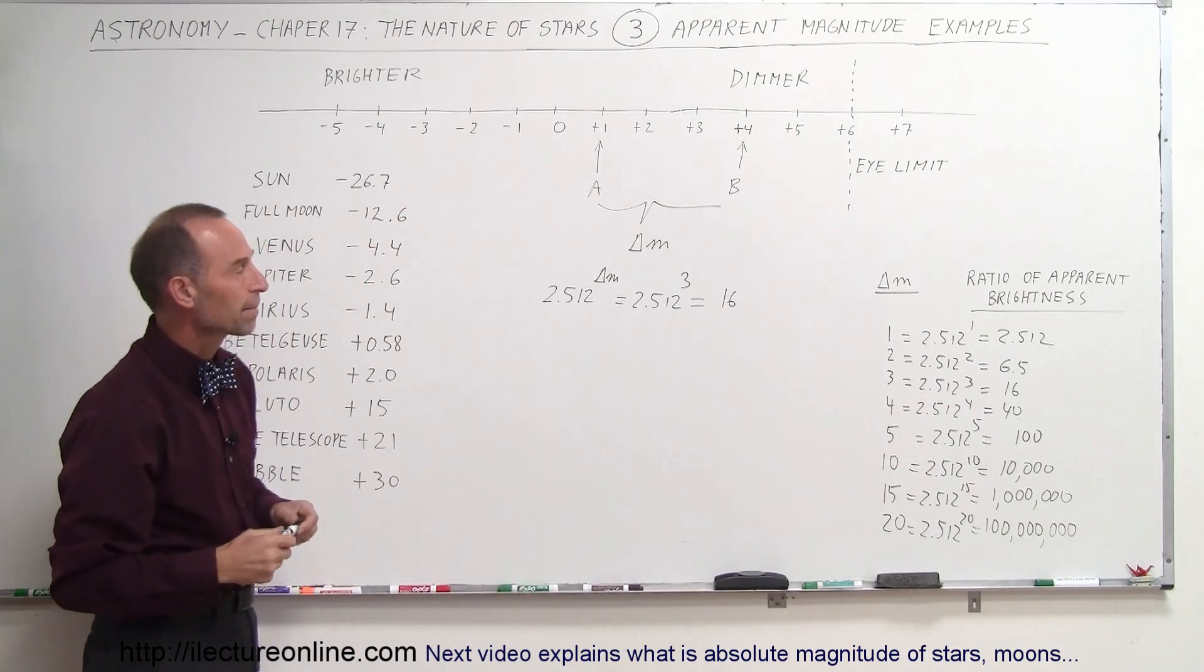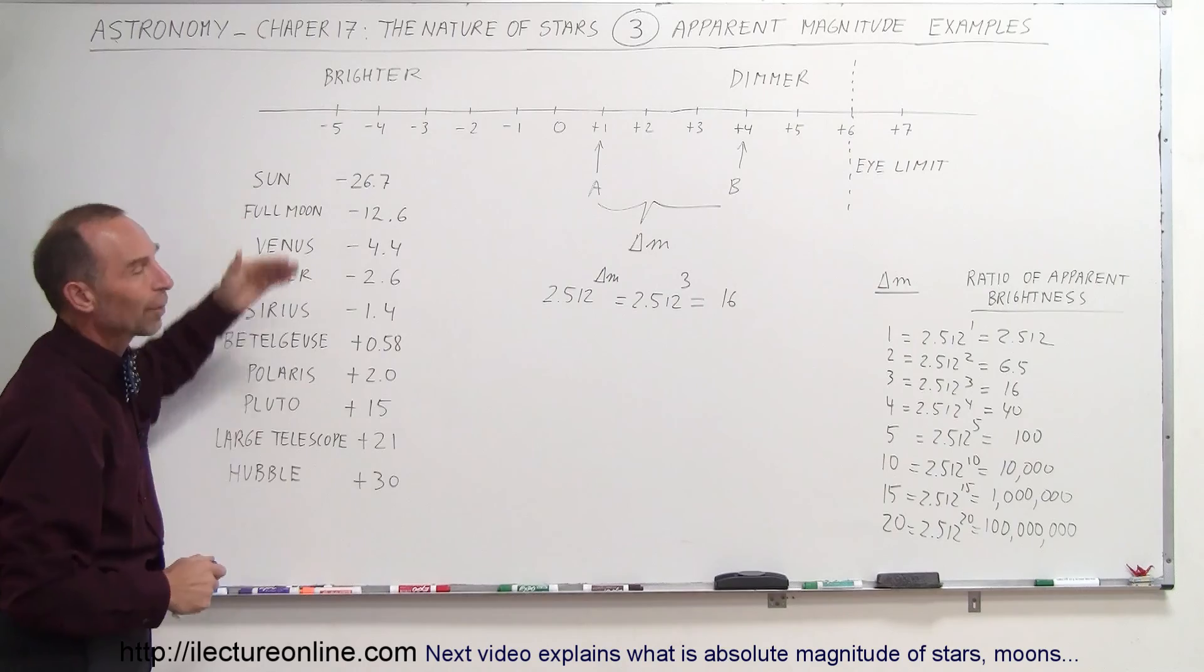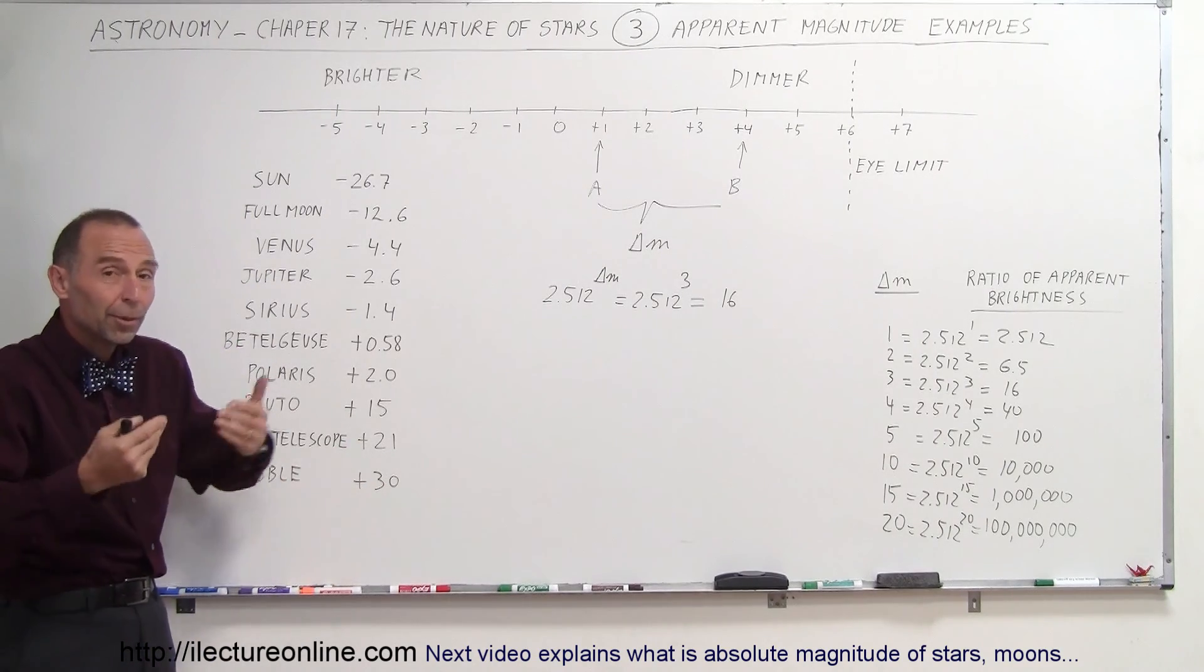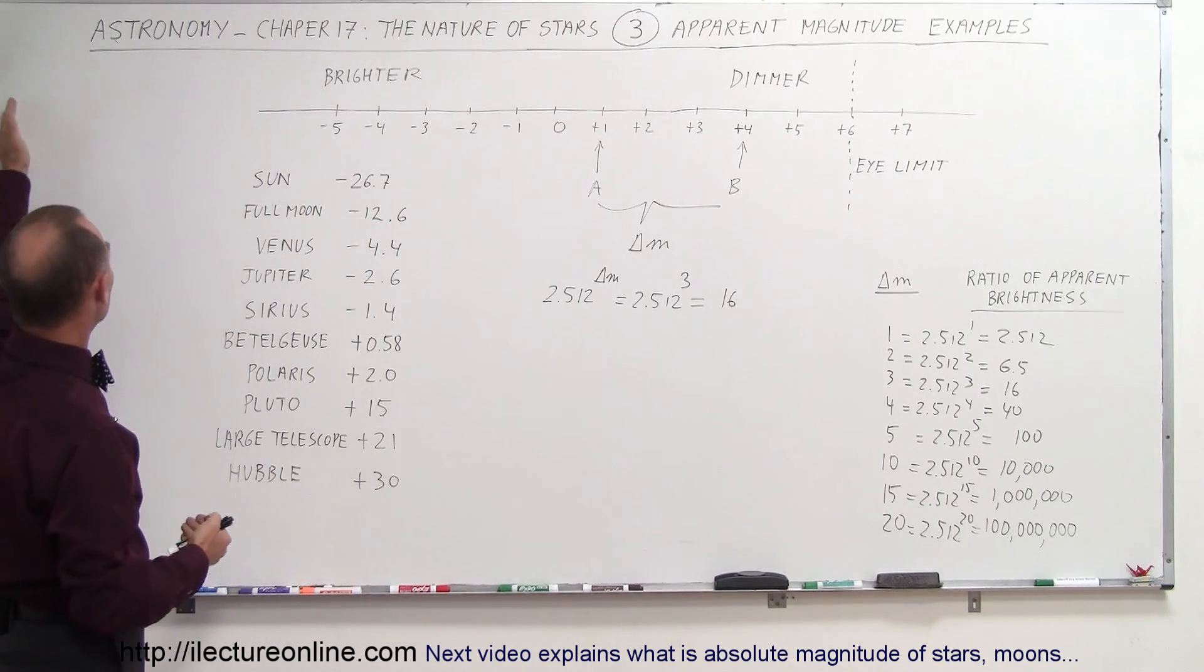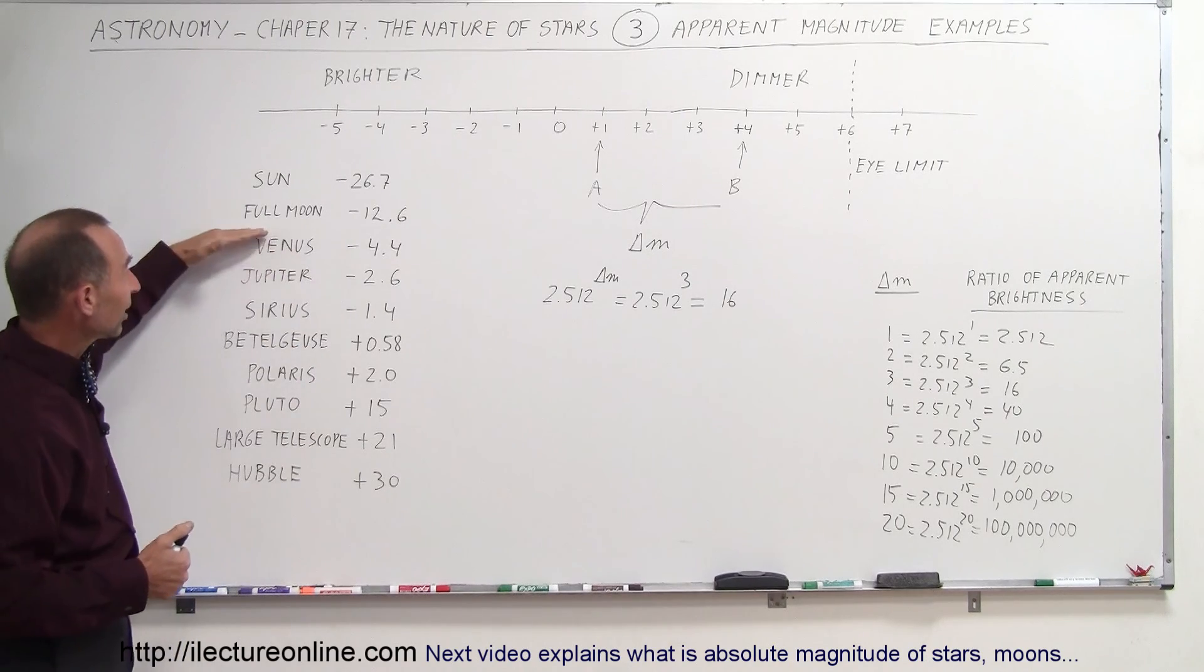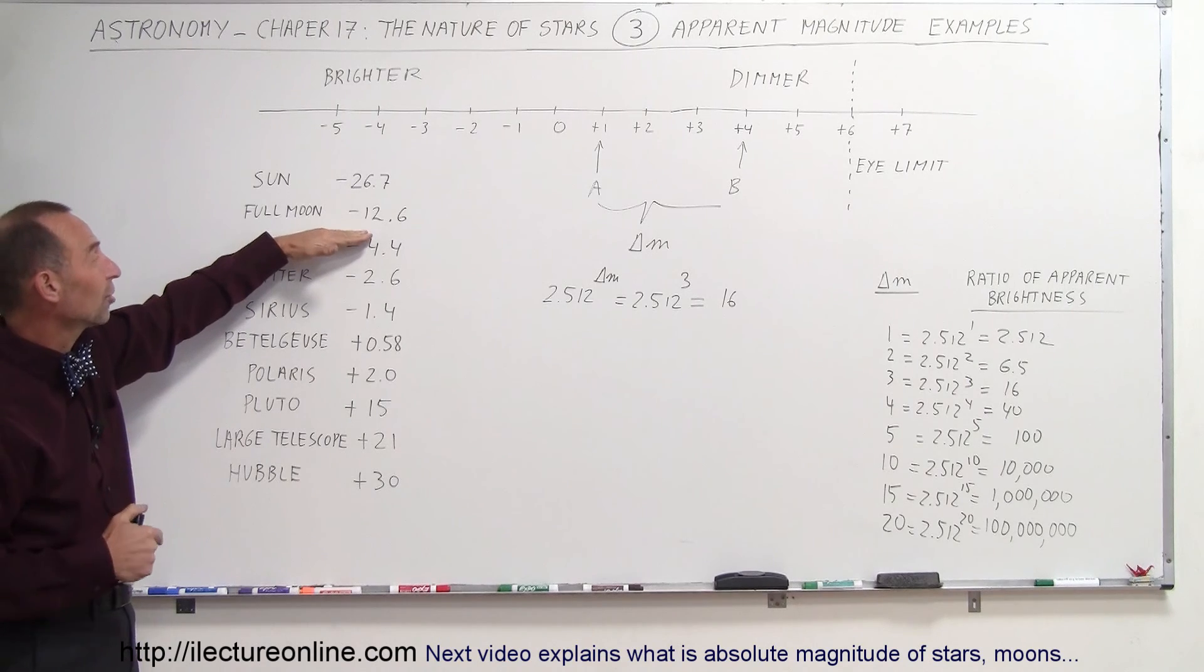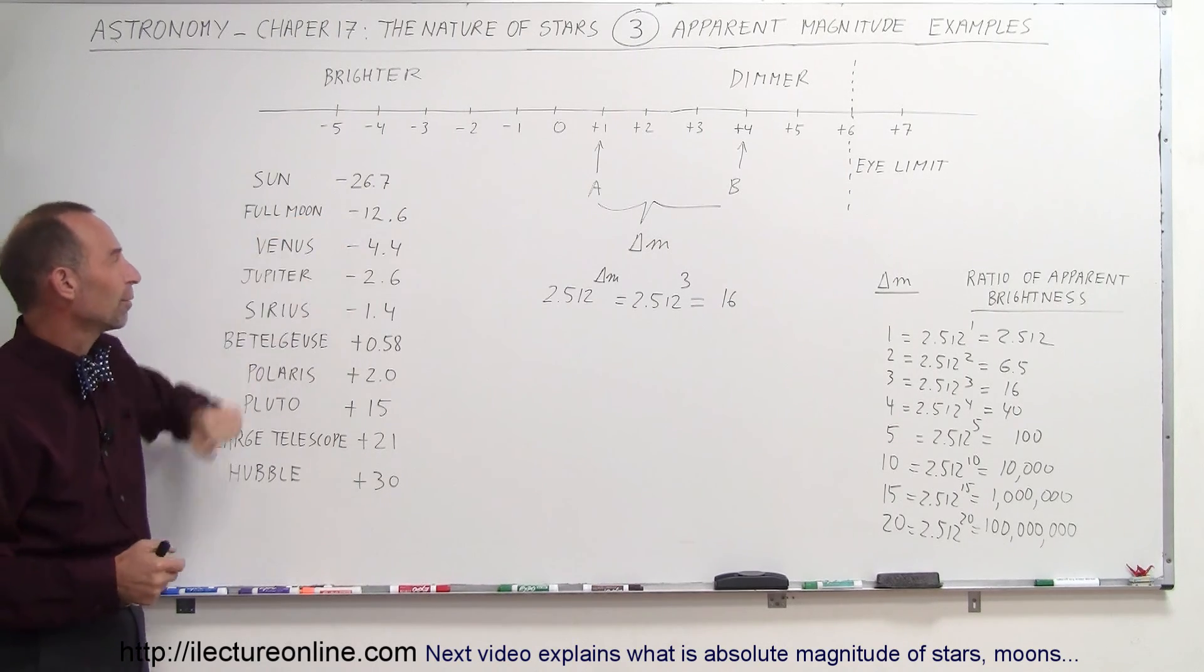Now here's some examples. Our sun is of course the brightest object in the sky, not because the sun is particularly bright as a star but because it's so close. It has a magnitude of minus 26.7. The moon is the second brightest object in the sky. We can actually see the moon during the day with the sun shining. It has an apparent magnitude of minus 12.6.